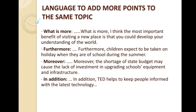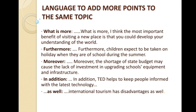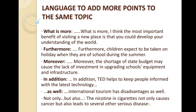I tried to use different types of sentences related to different essays. When we have to add more points, the list goes on with 'in addition.' For example: 'In addition, TED helps to keep people informed with the latest technology.' The next phrase is 'as well.' For example: 'International tourism has advantages — or disadvantages — as well.' Next is 'not only but also' — a grammatical structure used to add at least two ideas simultaneously. For example: 'The nicotine in cigarettes not only causes cancer but also leads to several other serious diseases.'